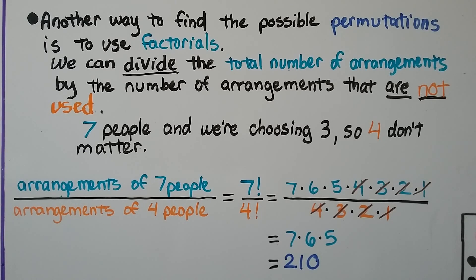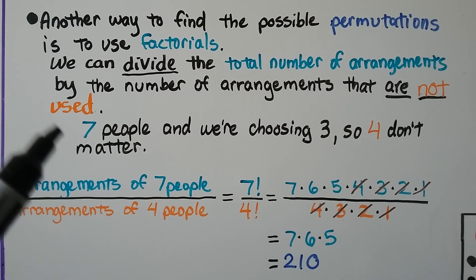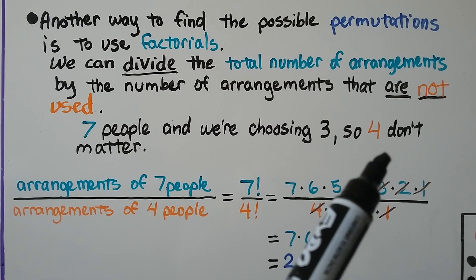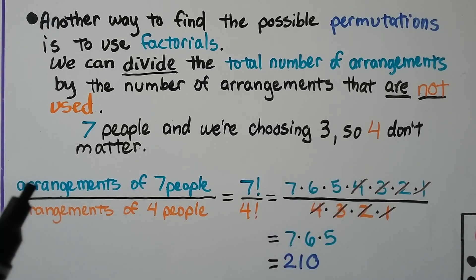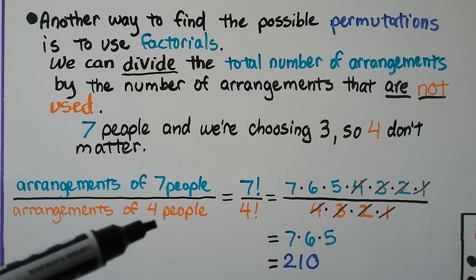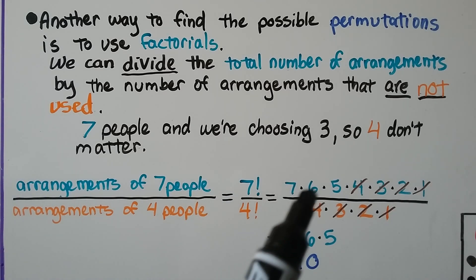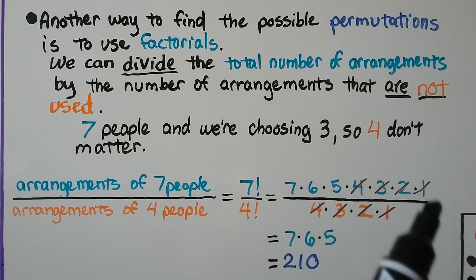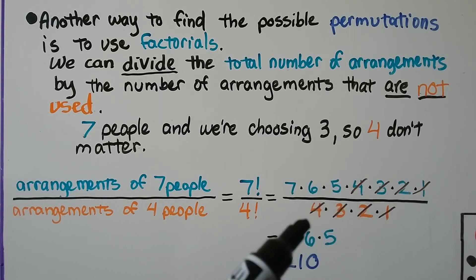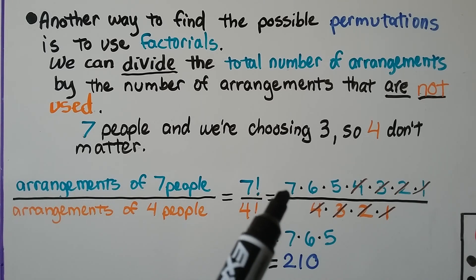Another way to find the possible permutations is to use factorials. We can divide the total number of arrangements by the number of arrangements that are not used. We had seven people and were choosing three, so four don't matter. We put the arrangements of seven people over the arrangements of the four we're not choosing — that's seven factorial over four factorial. That's seven times six times five times four times three times two times one, over four times three times two times one. The fours, threes, twos, and ones all cancel out, leaving us with seven times six times five, which is 210.